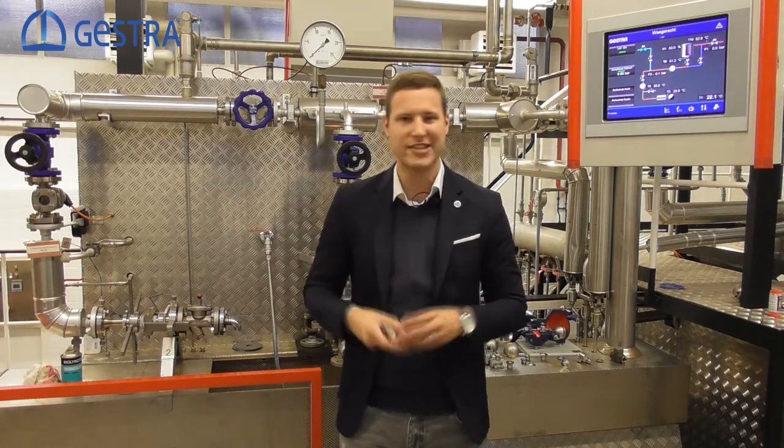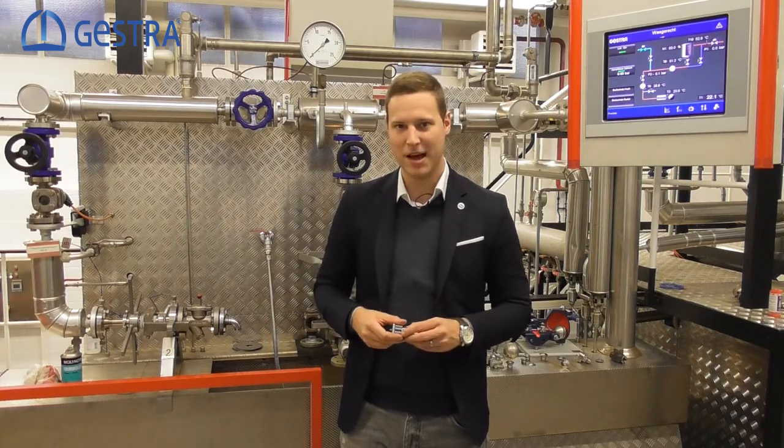The BK is a very robust steam trap perfect for removing condensate from your superheated steam lines, saturated steam lines, steam traces or heating coils. Moreover, the BK is perfect for air venting your steam systems.